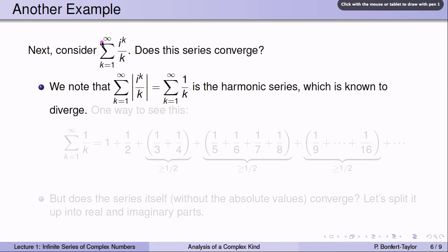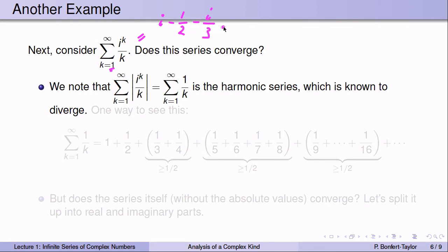Here's another example. Let's look at the sum of i to the k over k, for k from 1 to infinity. Does that series converge? Note the series starts at 1 because dividing by 0 is not allowed — series can start at other points without affecting convergence. For k equals 1 we get i over 1; for k equals 2 we get i squared over 2, so minus one half; for k equals 3 we get i cubed over 3, which is minus i over 3; for k equals 4 we get i to the 4th, which is 1 over 4. And then plus i over 5, minus 1 sixth, minus i over 7, plus 1 eighth, and so forth.